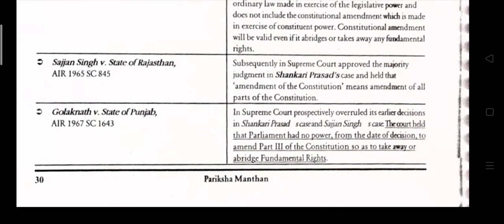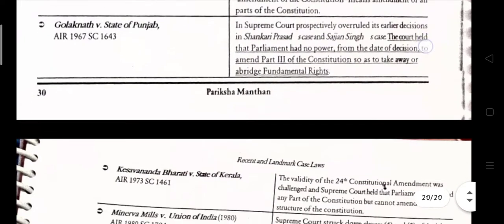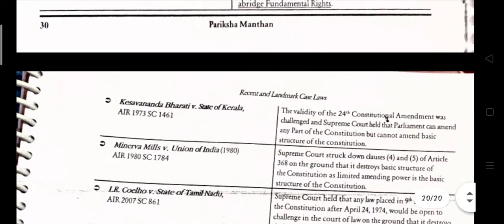In Golak Nath v. State of Punjab (1967), the Supreme Court prospectively overruled the earlier decisions in the Shankari Prasad case and Sajjan Singh case. The court held that parliament has no power to amend Part 3 of the constitution so far as it takes away or abridges the fundamental rights.